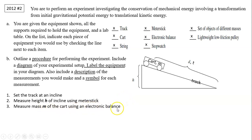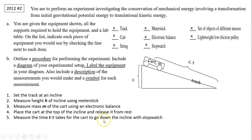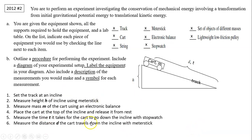You measure the height with a meter stick and the mass with an electronic balance. Next, place the card on top of the incline and release it from rest — it's important to indicate 'from rest.' Then measure the time it takes for the car to go down the incline with a stopwatch, and measure the distance. Make sure you have your diagram, symbols, descriptions, labeled equipment, a clear procedure, and the diagram all included.